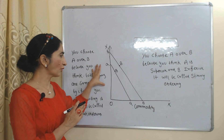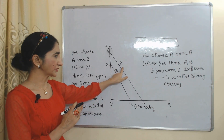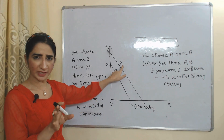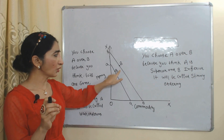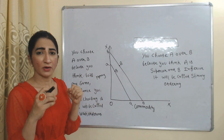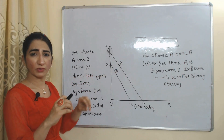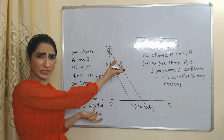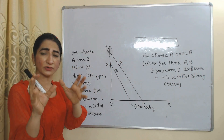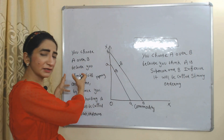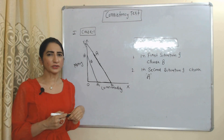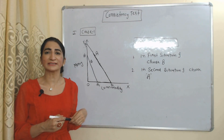In this diagram, the x-axis has commodity and y-axis has money. We have two options: A and B. If you choose A over B because you think A is superior and B is inferior, that is called strong ordering. On the other hand, if you choose A over B because you think both are equal and you are choosing A by chance, that is called weak ordering. Under strong ordering you have a specific like or dislike, but under weak ordering things are like a cluster — all things are the same.